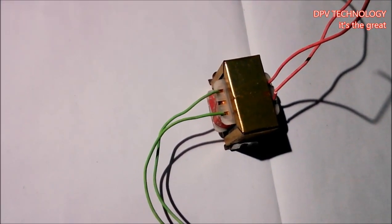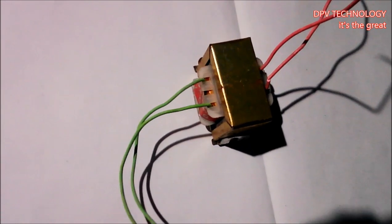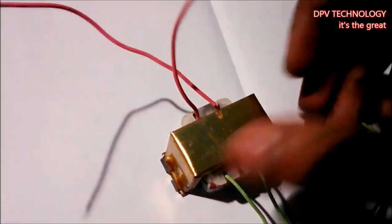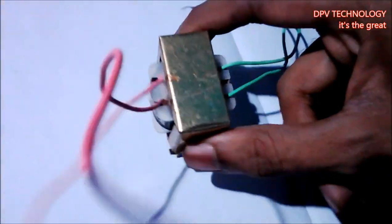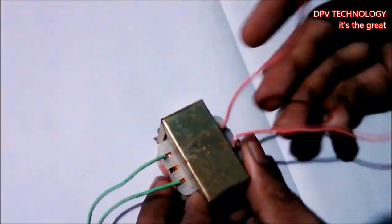Welcome to DPV Technology. Today we will see how to find out the primary and secondary side of a step-down transformer. For this, you need the transformer and a multimeter.